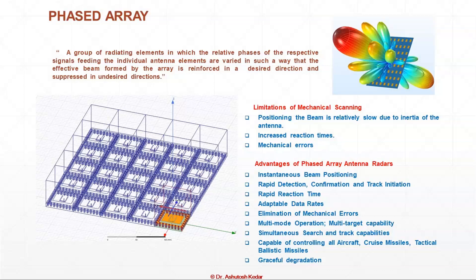You can rapidly detect, confirm and track the targets. The reaction time is quite rapid. We have adaptable data rates and can control the beam scanning rate, completely eliminating mechanical error. We have multi-mode operations — we can form multiple beams looking in different directions to track multiple targets. We can simultaneously search as well as track. We have the capability of controlling aircraft, cruise missiles, tactical and ballistic missiles. The last advantage is graceful degradation.